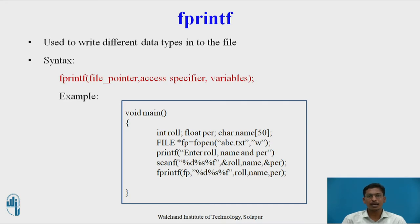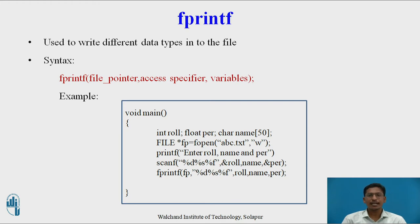The next two functions are fprintf and fscanf, used for reading and writing data types other than character or string — such as integer, double, or float values. For example, to write an integer (roll number), a string (name), and a float value, use: fprintf(fp, "%d %s %f", roll_number, name, percentage). These format specifiers %d, %s, and %f correspond to integer, string, and float respectively.